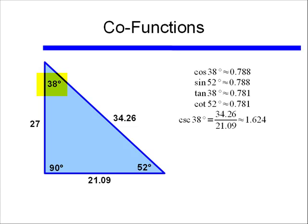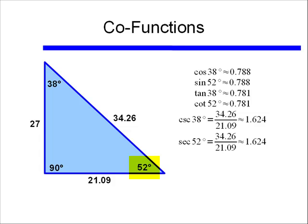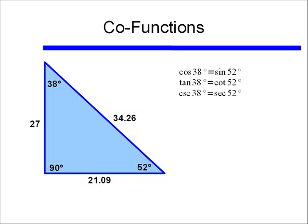If we look at the cosecant of 38 degrees — cosecant equals the hypotenuse divided by the opposite side — that is 34.26 divided by 21.09, or approximately 1.624. And if we look at the secant of the 52 degree angle, that equals the hypotenuse divided by the adjacent side, which is the same value as the cosecant of 38 degrees. So cosine of 38° equals sine of 52°, tangent of 38° equals cotangent of 52°, and cosecant of 38° equals secant of 52°.